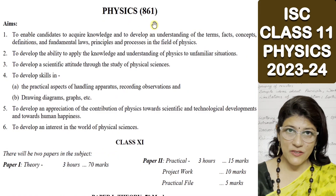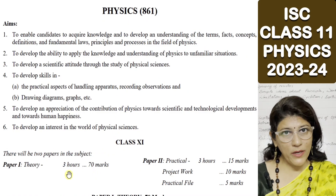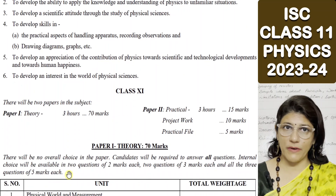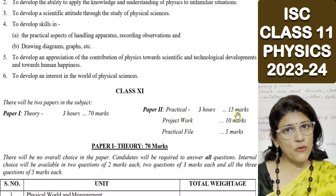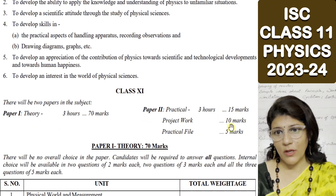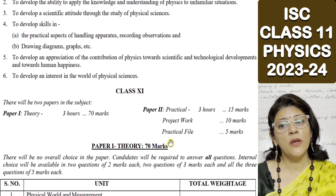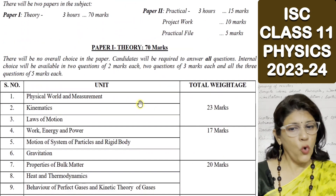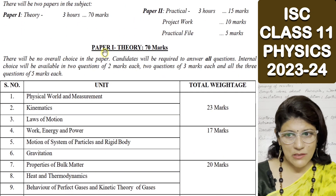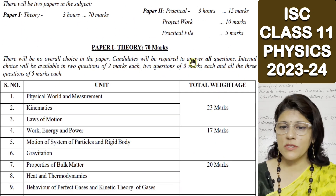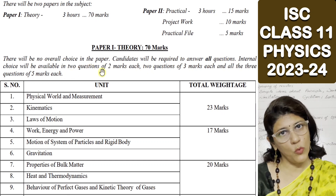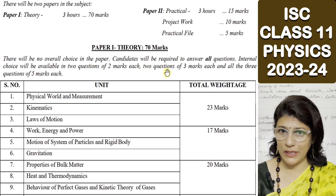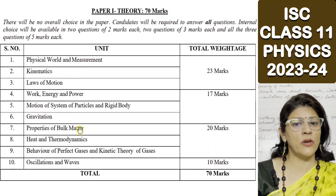In physics, you will have two papers. One is of 70 marks which is your theory paper, another 15 marks for your practical work, 10 marks for your project work and 5 marks for your practical file. There is no overall choice; all questions are compulsory. Internal choice will be available in two questions of two marks each and two questions of three marks each.